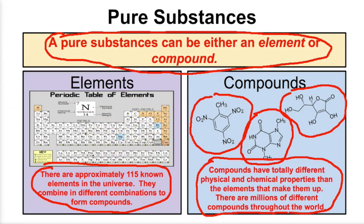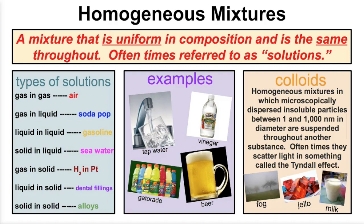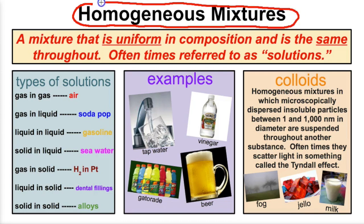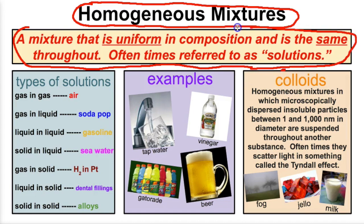Now let's take a look at mixtures. There are two kinds of mixtures: homogeneous mixtures and heterogeneous mixtures. A homogeneous mixture is a mixture that is uniform, or the same throughout. These are oftentimes referred to as solutions — a mixture that is the same throughout.